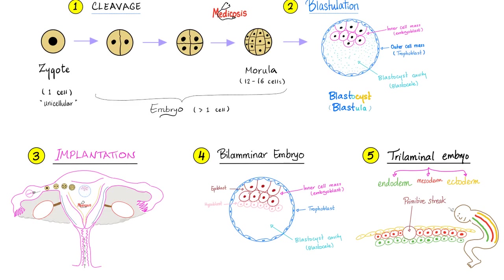In order to understand what is happening, you need to go back to square one: embryology. Fertilization happens, then the Zygote, then Cleavage, Blastulation, Implantation, Bilaminar Embryo, and then the famous Trilaminar Embryo.